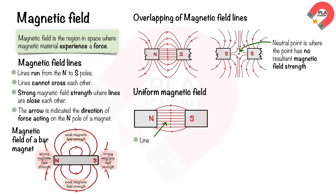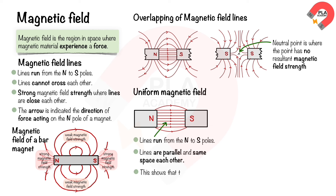In a uniform magnetic field between two opposite poles, field lines run from north to south and are parallel and equally spaced, showing that the magnetic field strength remains constant.